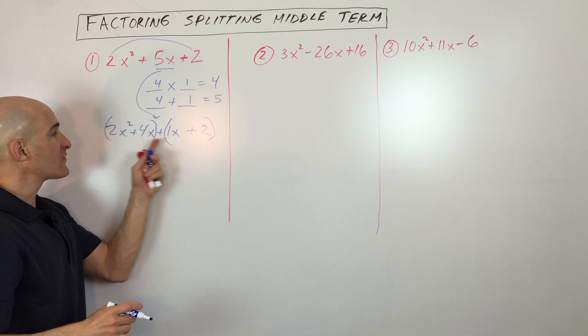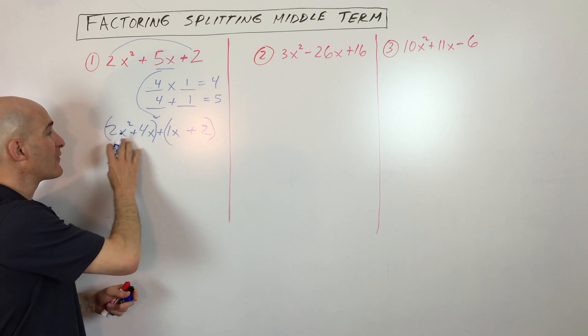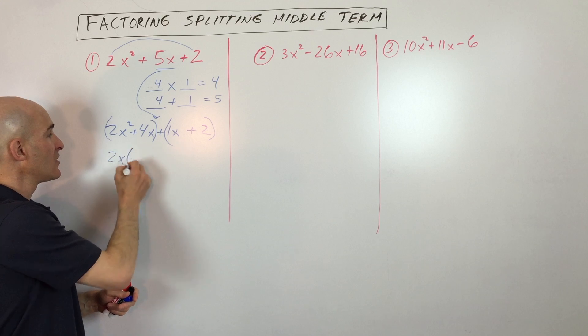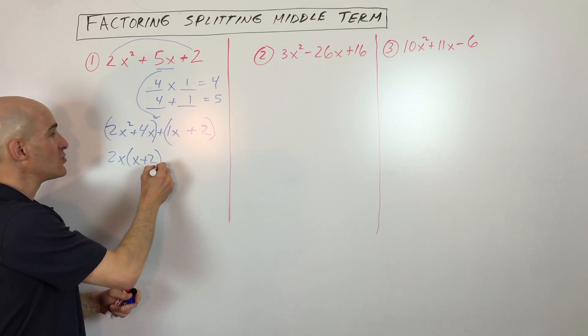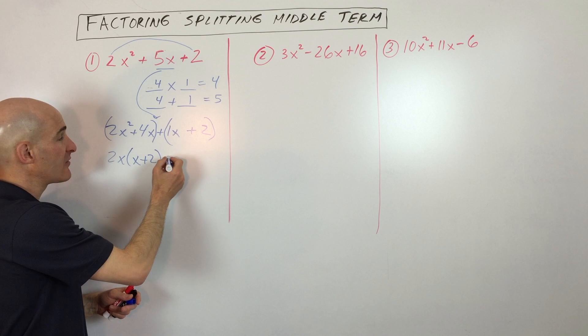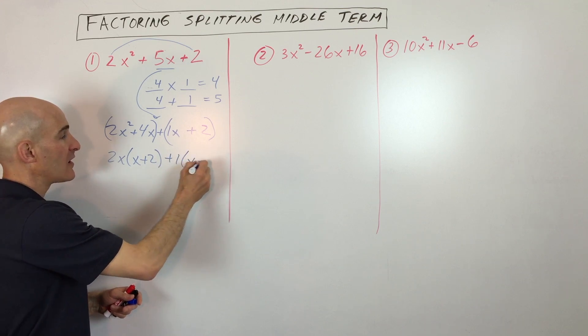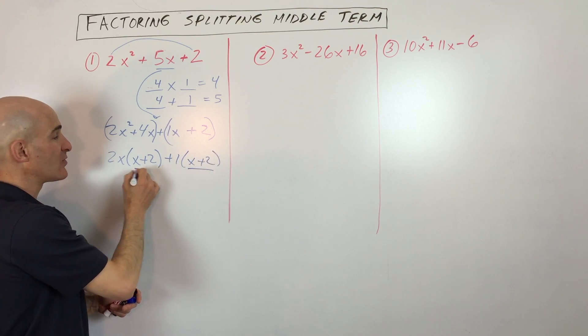Then all you have to do is factor out the greatest common factor out of each group. So I'm going to factor out 2x here, and that's going to leave us with x plus 2. And I really can't factor anything out of here except for a 1, and that also leaves us with x plus 2.